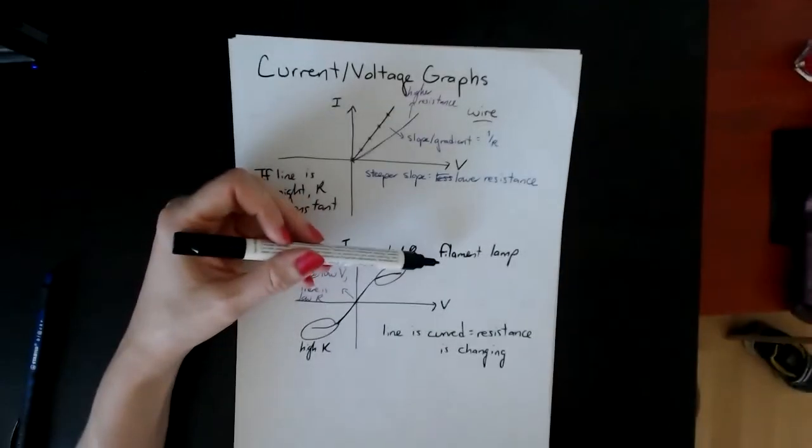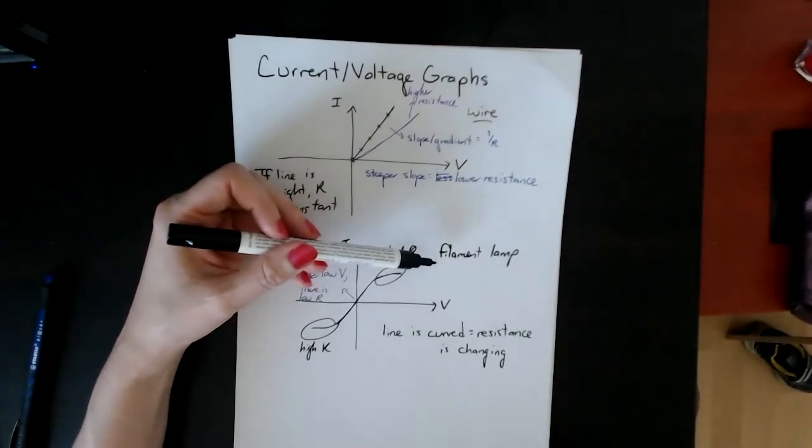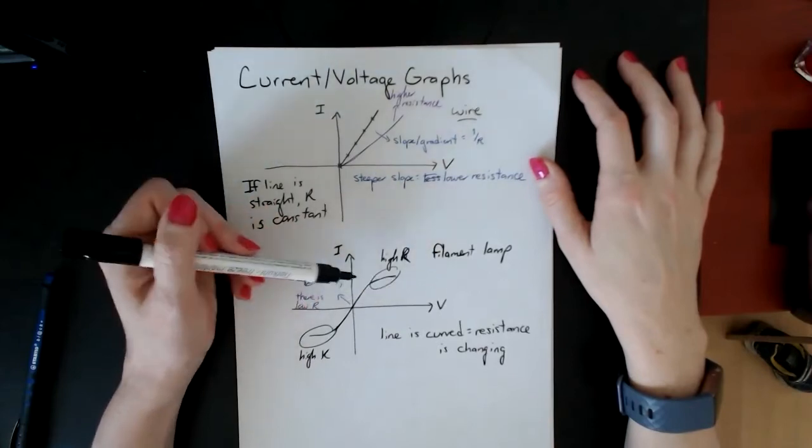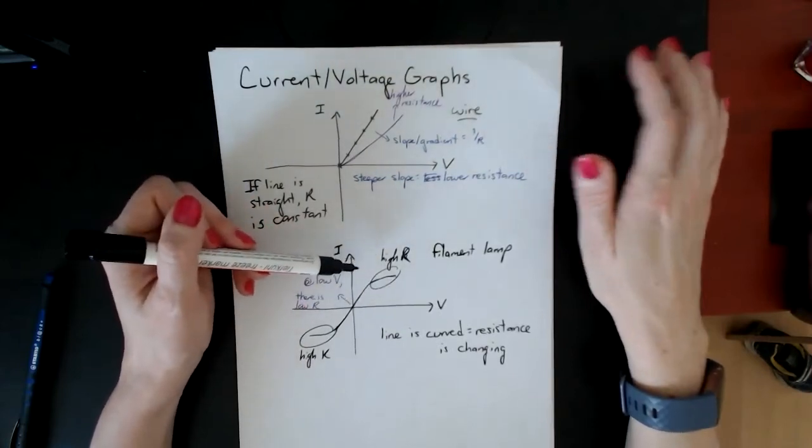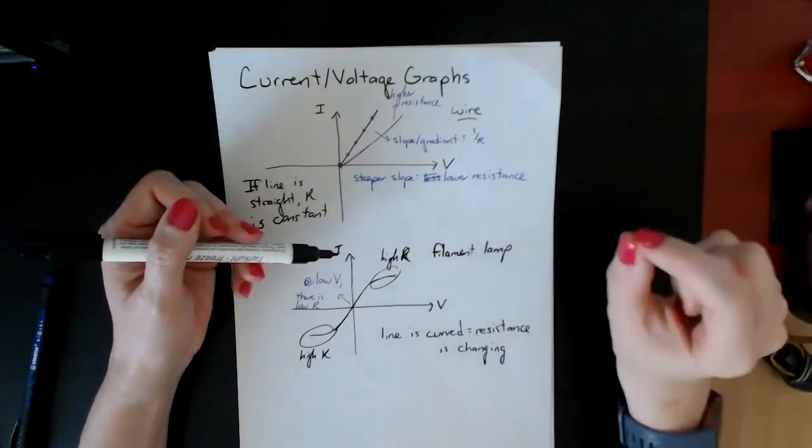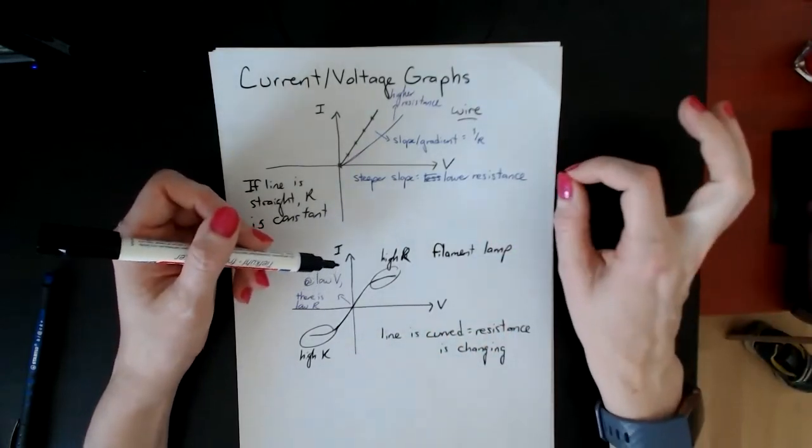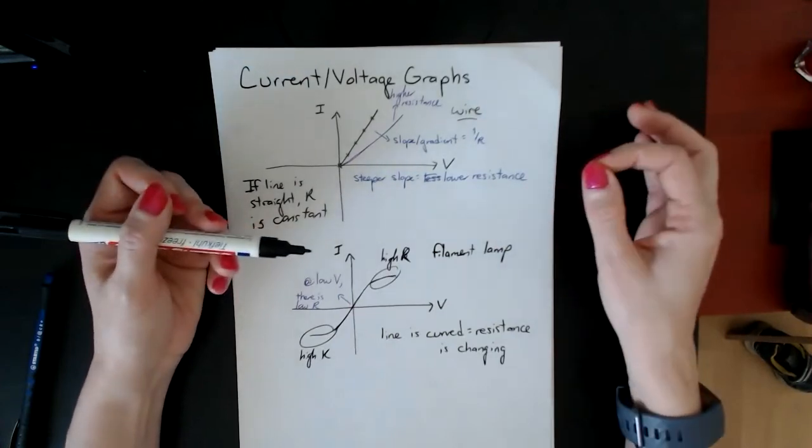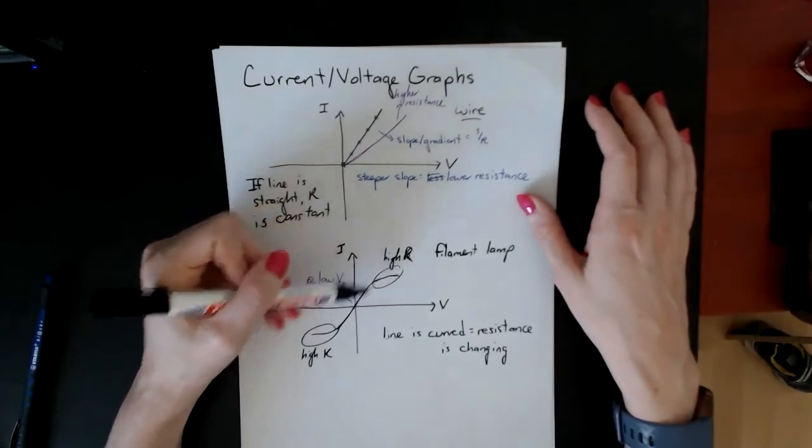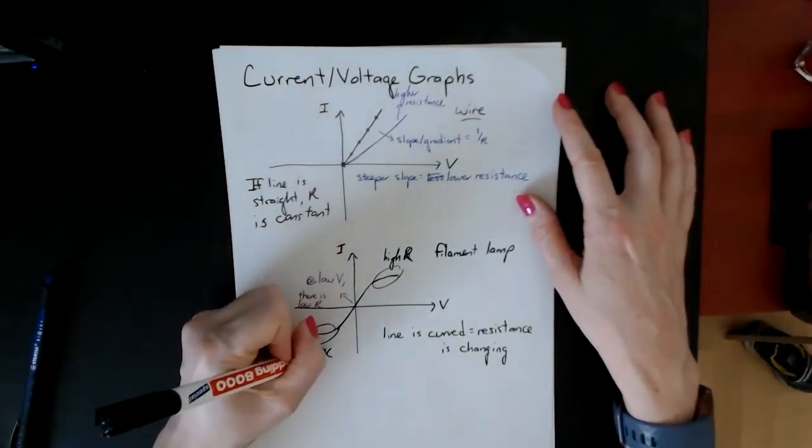Filament light bulbs, if you remember, have a very, very thin wire running through them. As you increase the voltage or current, you're basically creating a traffic jam, and the wire gets very hot. If you've ever touched a filament light, you know this—it's very hot. This makes it more difficult for electrons to move through, and they start to collide with each other.